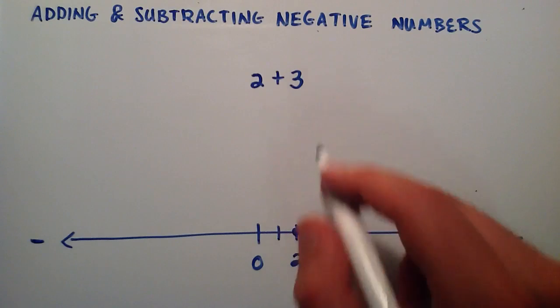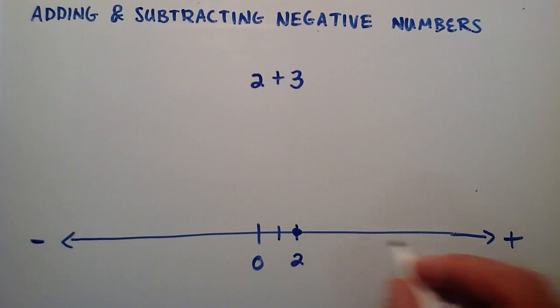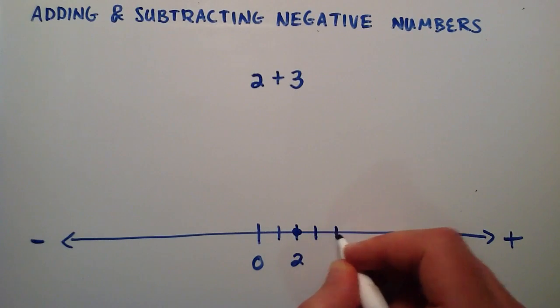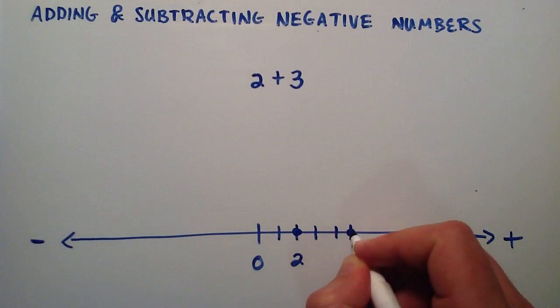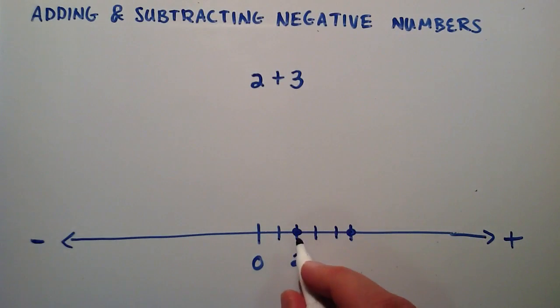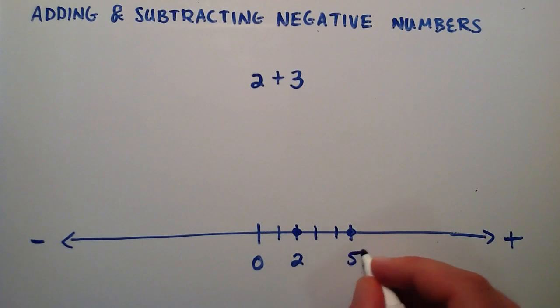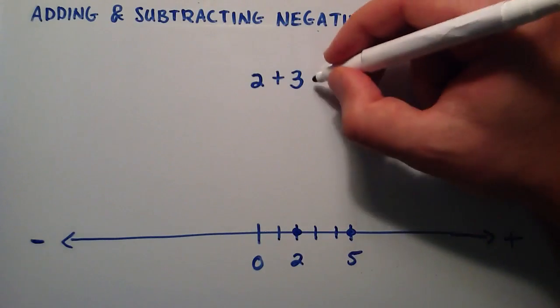And then we're adding a number that's 3 that is positive. So we're adding a positive 3, so you simply go in the positive direction. 1, 2, 3. And so the result of 2 plus 3 is equal to 5. 1, 2, 3, 4, 5. So that's pretty simple.